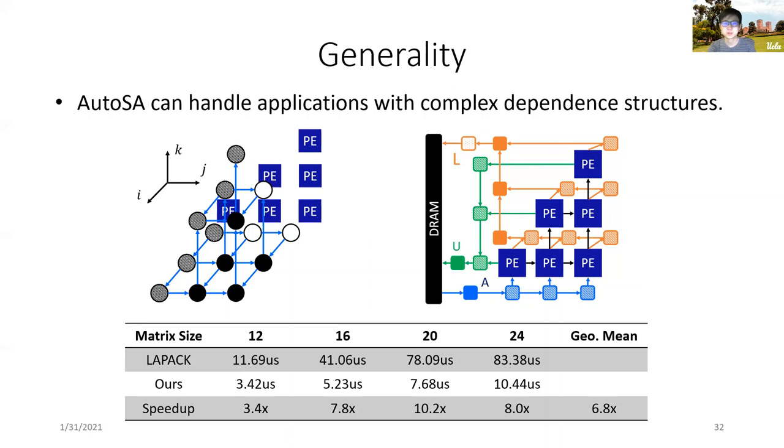As an example, AutoSA can map it to a triangular-shaped systolic array. The figure on the right shows the detailed micro-architecture of the array. We may notice that different shapes of I/O network are generated following the dependence structure of this architecture. We also compare the performance of the generated systolic array versus the LAPACK benchmark on the CPU. The generated design achieved an average speedup of 6.8x versus the CPU baseline.